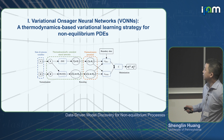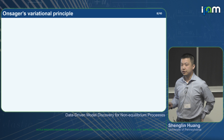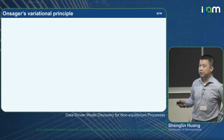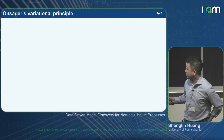There are many variational principles in nature: for elasticity we have the minimum potential energy principle, for optics we have Fermat's principle, and for classical mechanics we have the Euler-Lagrange equation derived from the Hamiltonian system. For non-equilibrium systems there also exists a variational principle called the Onsager variational principle.